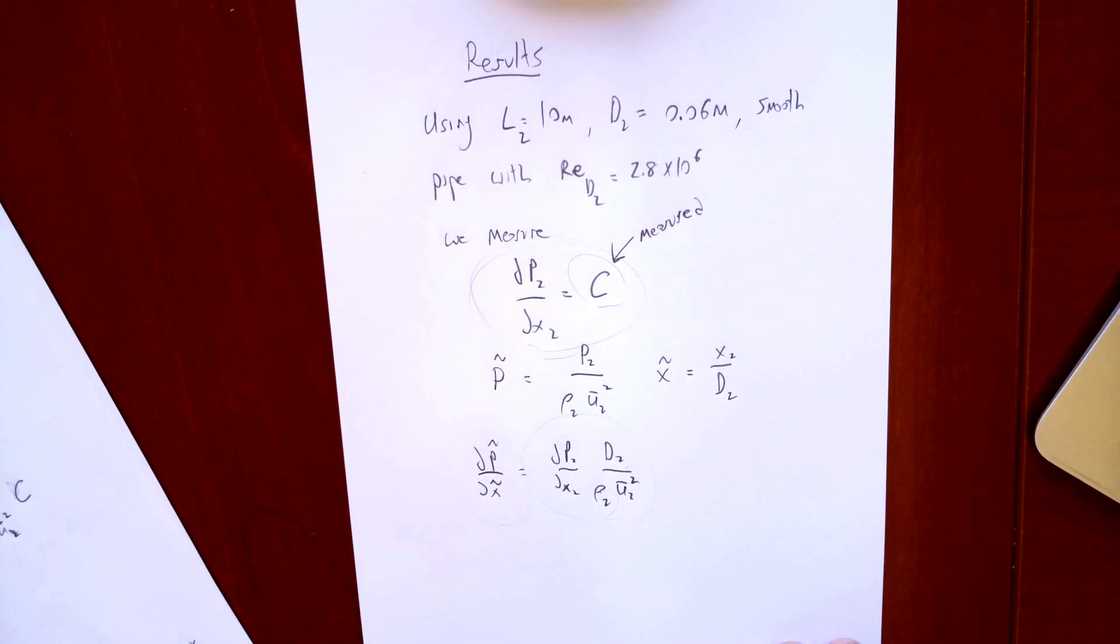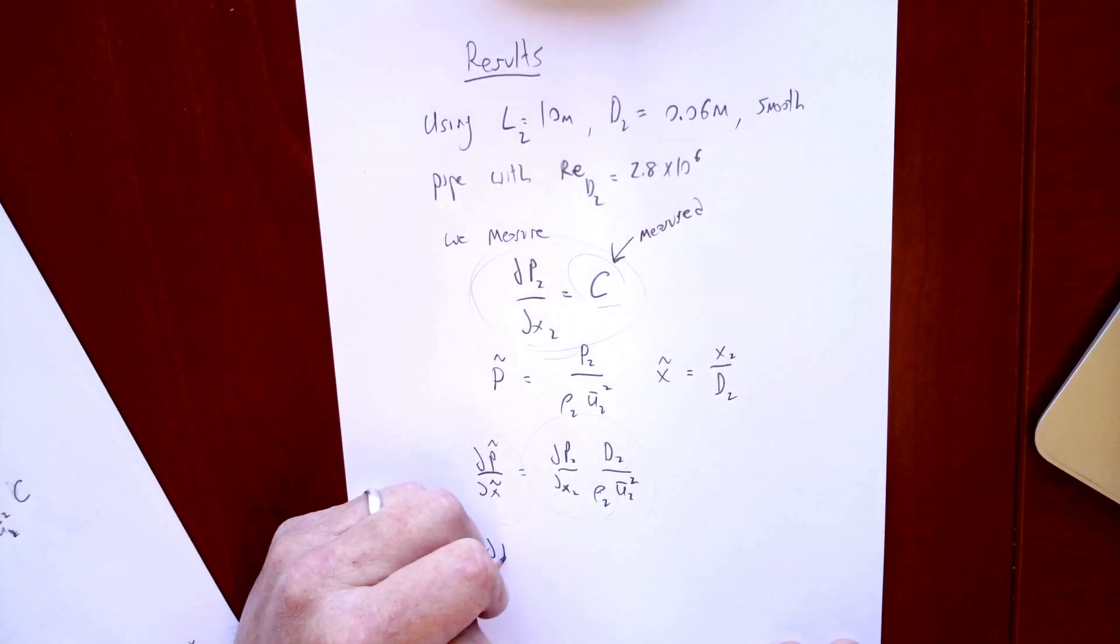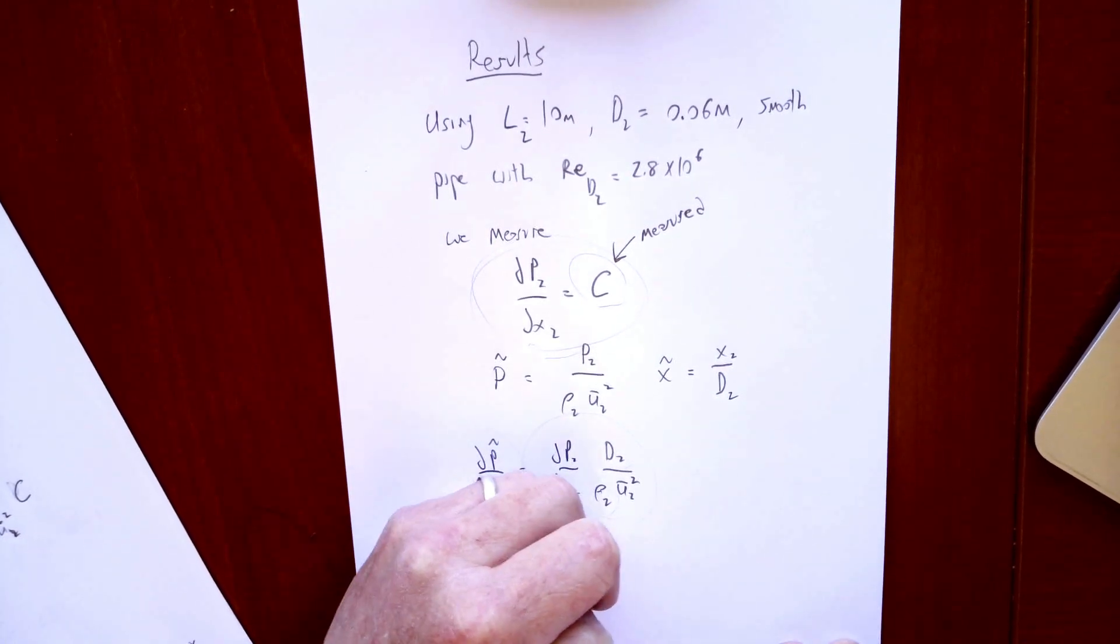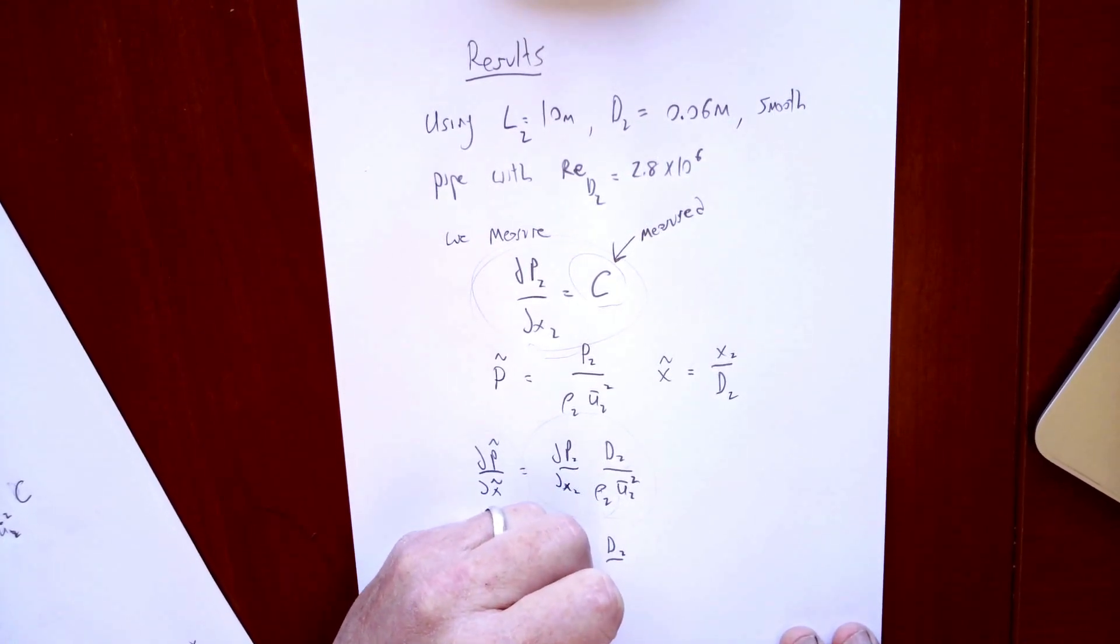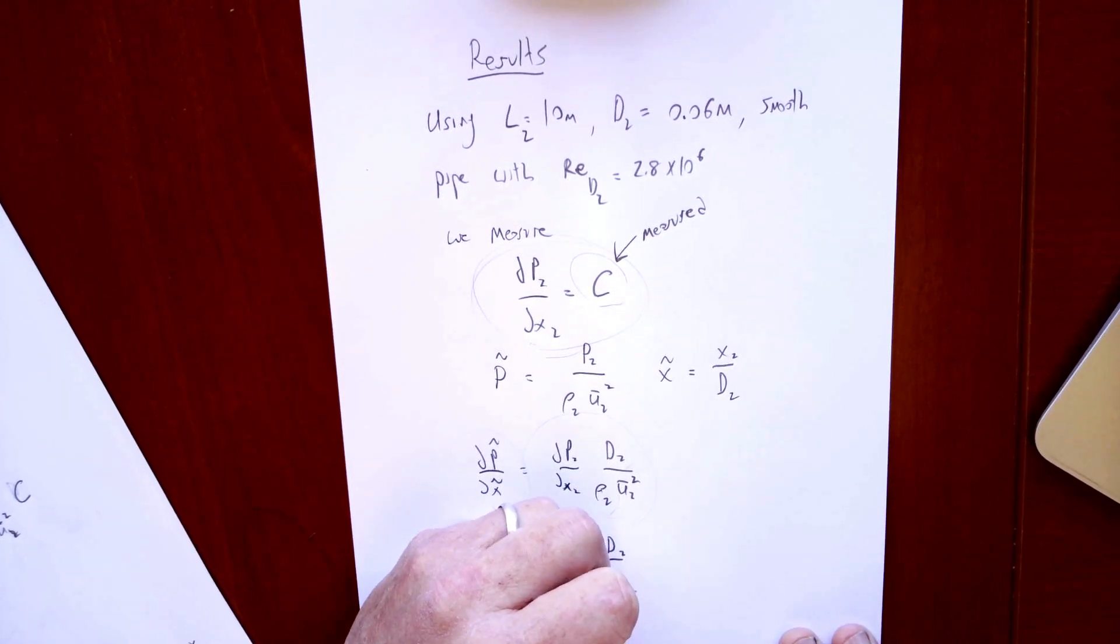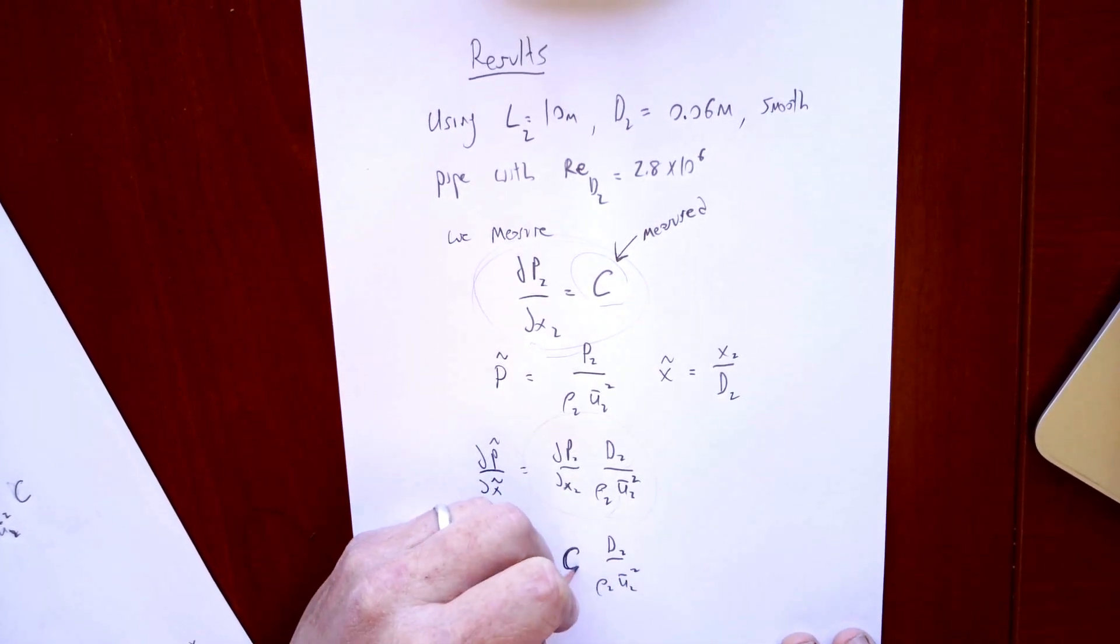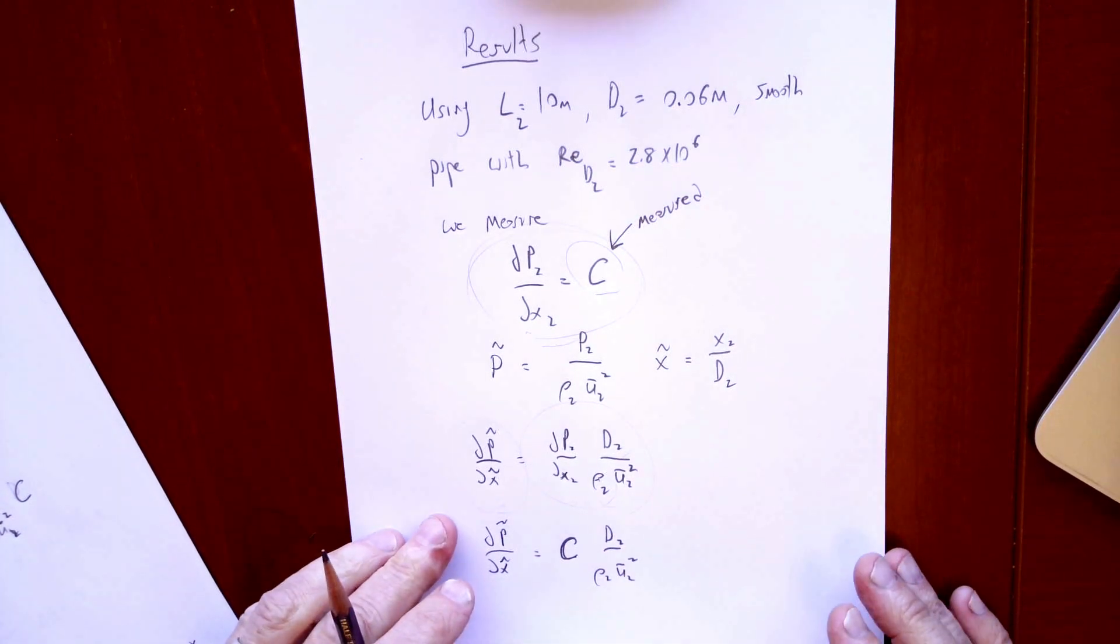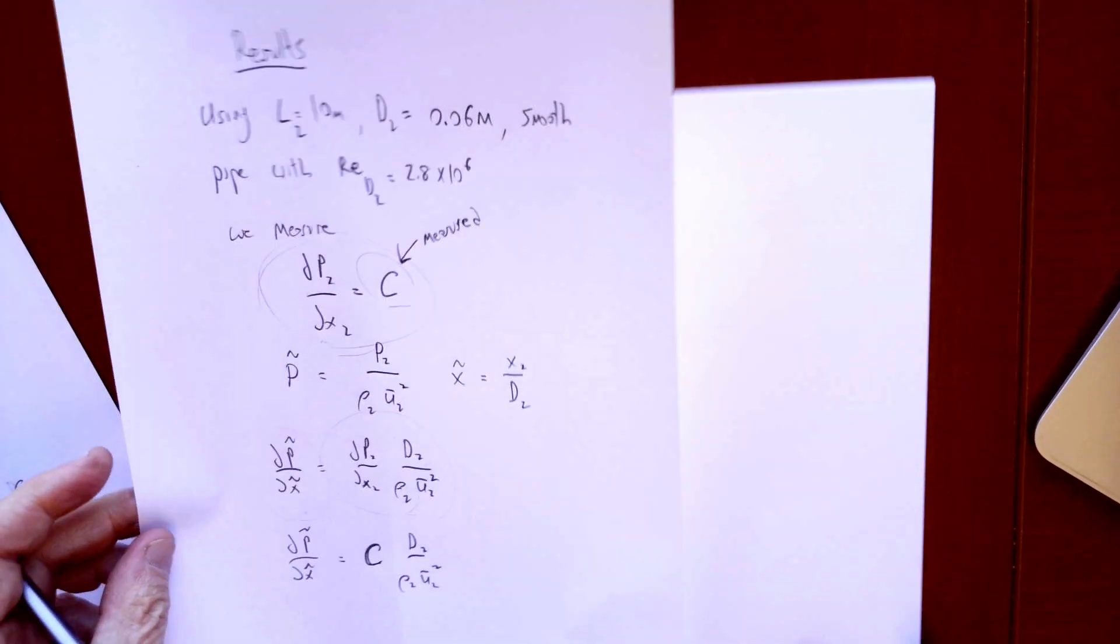So then you can say, well, we measured this C, so that means that the dimensionless one, this is where we actually put in a value for that, and put in C and D2 and ρ2 and U2 squared. So that's what we end up with as our experimental result put into dimensionless terms.